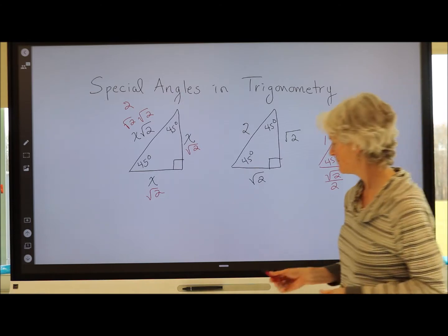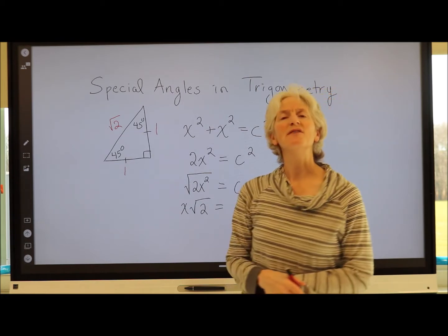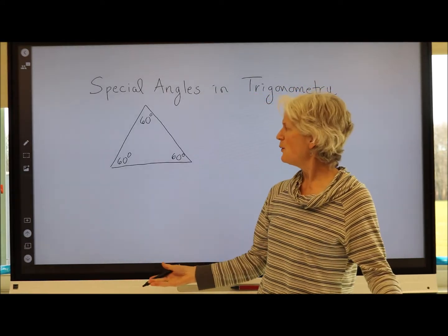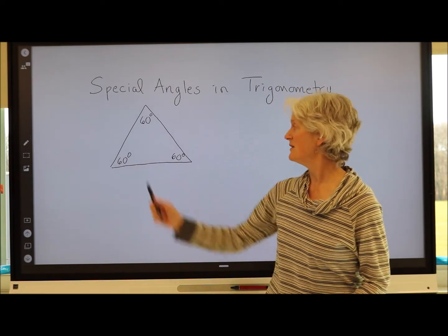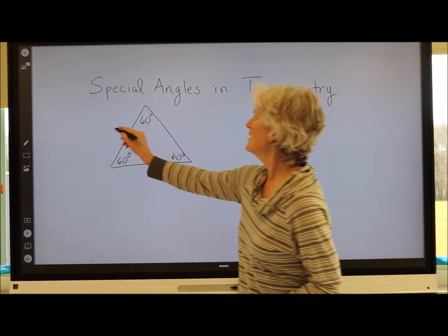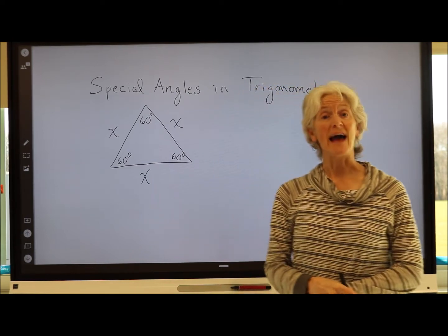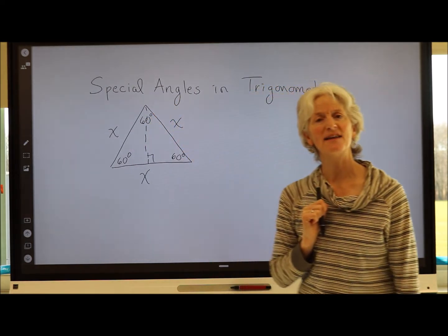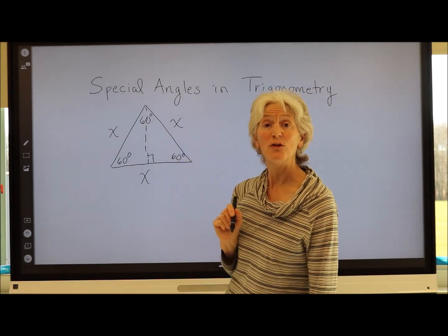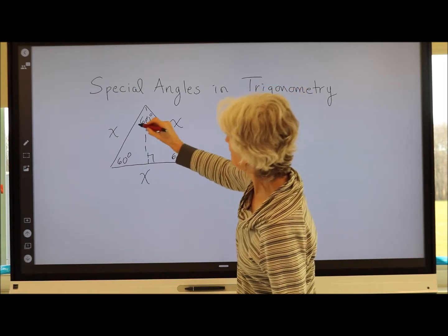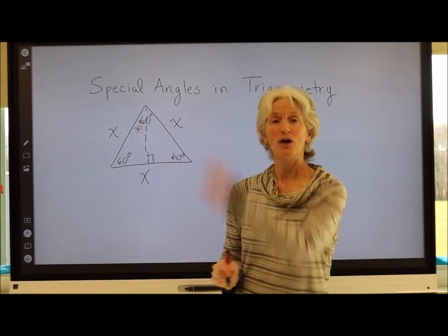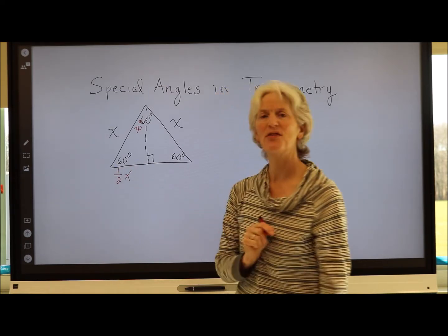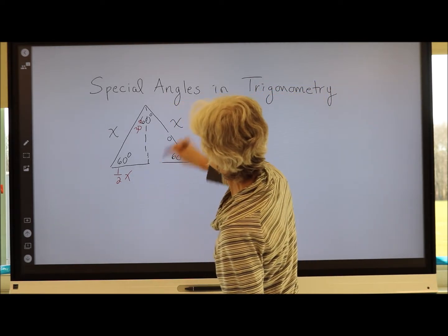Now let's look at a 30-60-90 triangle. Start with an equilateral triangle where all angles and sides are equal — let's say all sides have length x. Drop an altitude down, and in an equilateral triangle that breaks each top angle into two equal 30° pieces and also bisects the base, so that bottom side becomes x/2. We've just created a 30-60-90 triangle.